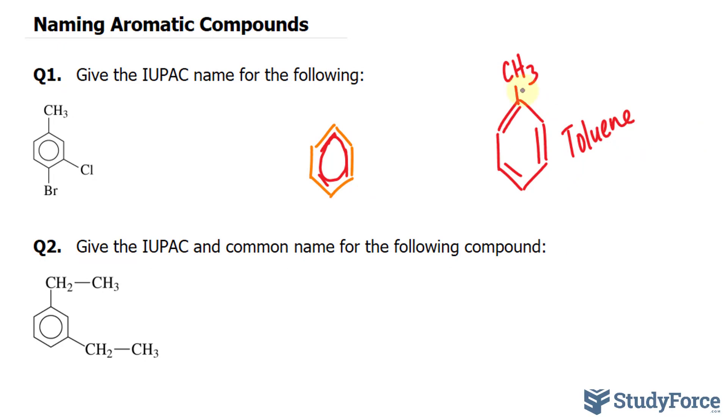Now to name this, we begin at this substituent, the CH3. We call this C1, C2, and C3, where our second substituent is found.